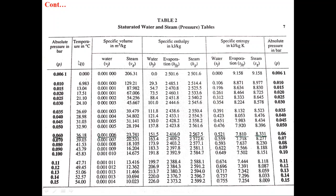The second column gives us the value of saturation temperature in degree Celsius for the given pressure. The third column contains VF and VG. The fourth column contains HF, HFG, and HG. The fifth column contains SF, SFG, and SG.